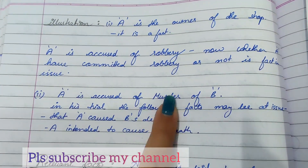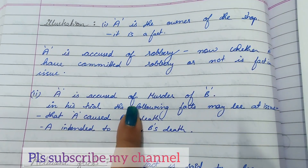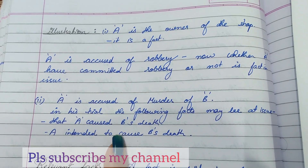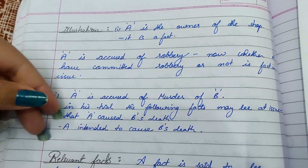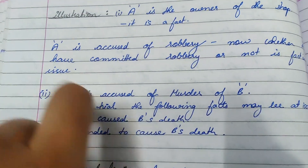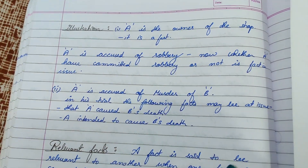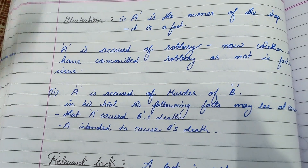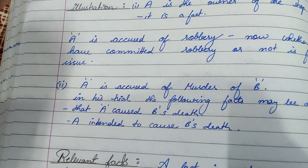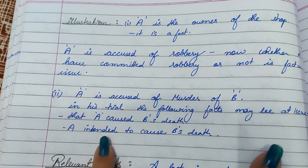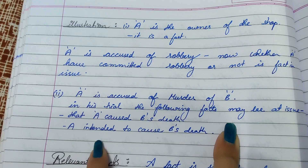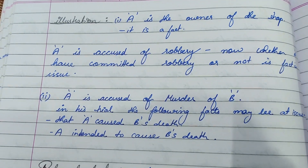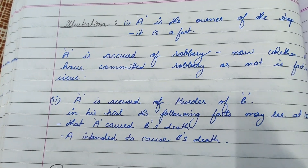Second illustration: A is accused of the murder of B. In the trial, the following may be facts in issue — that A caused B's death, and that A intended to cause B's death. There is a big difference between the two. For example, if you threatened someone saying 'I will kill you,' and the next day that person is murdered — your intent to murder does not necessarily mean you caused the murder. That is where facts in issue arise. In our next video, we will continue with relevant facts.